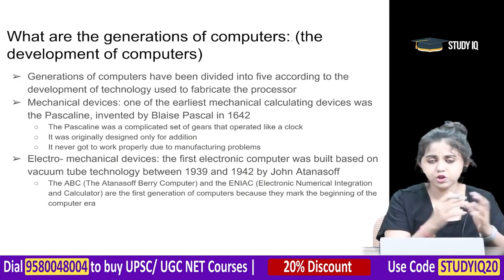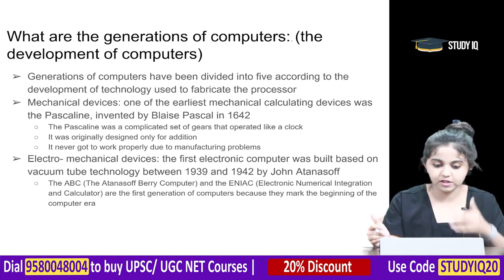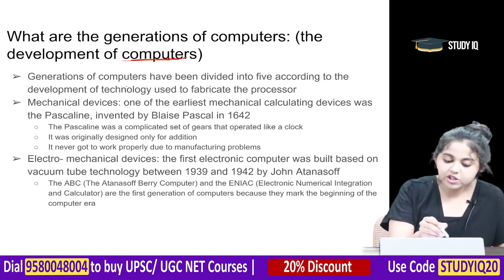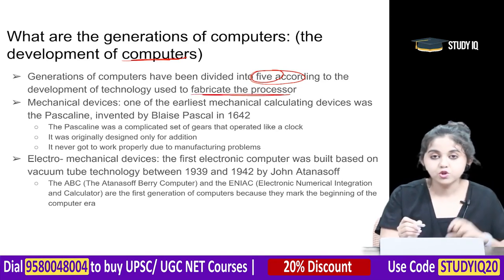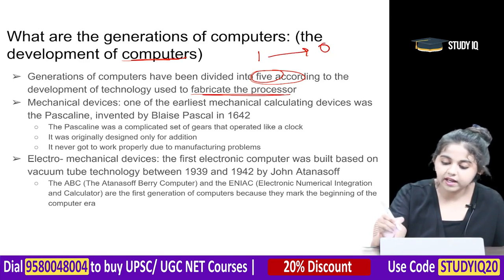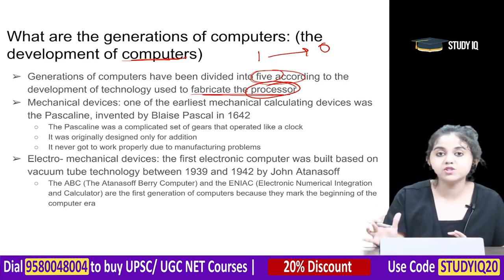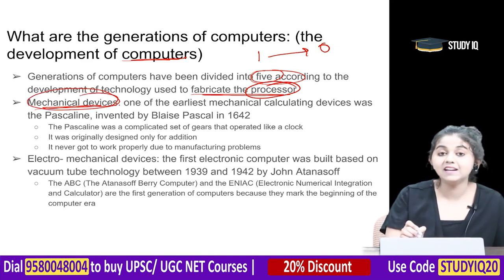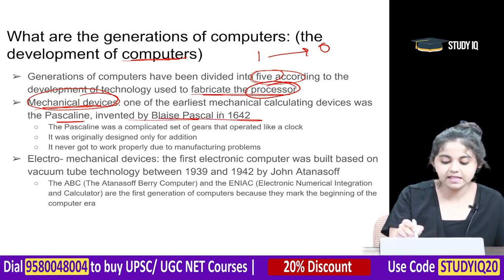Generations of computers: the development of computers can be understood through five generations, divided according to the technology used to fabricate the processor. One of the earliest mechanical calculating devices was the Pascaline, invented by Pascal in 1642. It was a complicated set of gears operating like a clock, originally designed only for addition, but never worked properly due to manufacturing problems.